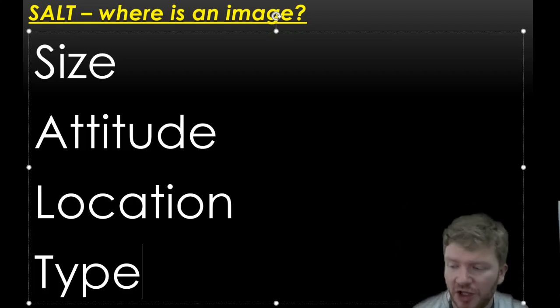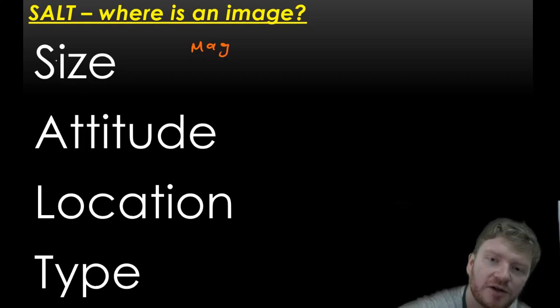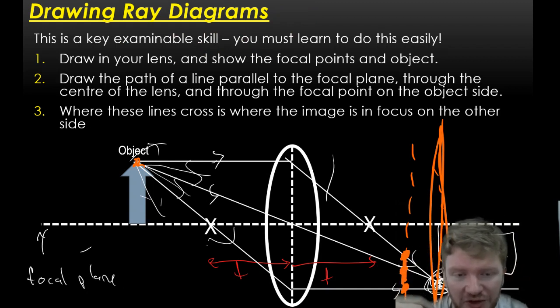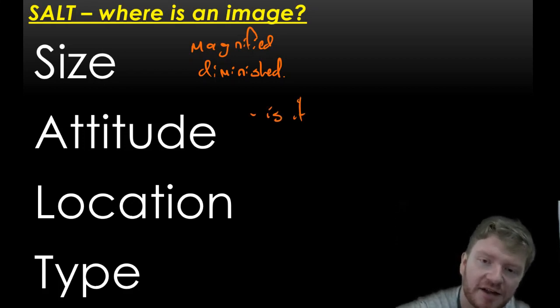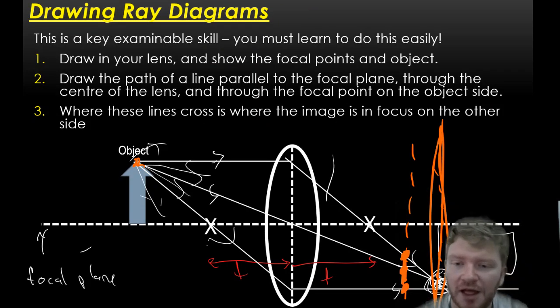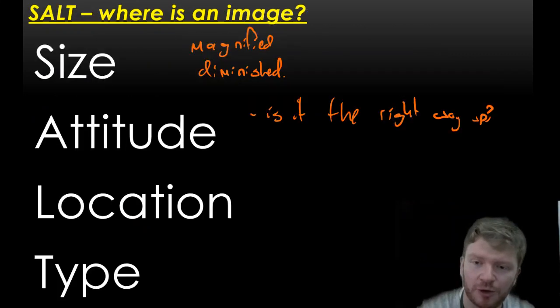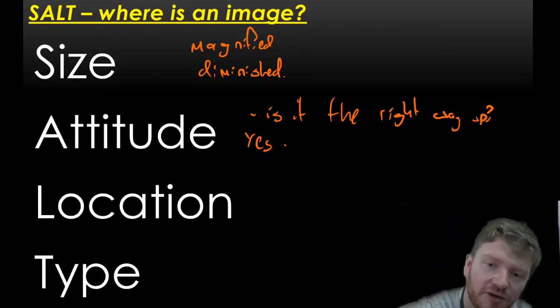So when it comes to size, you have two options. You can have magnified or you can have diminished. And hopefully, it's fairly obvious which is which. In this instance, it's about the same, actually. But if you find that the arrow that you draw is much bigger than the object, then it's a magnified image. If the arrow that you draw is much smaller, it's a diminished object. Attitude is basically, is it the right way up? If you think about the one that we've just done, it is not the right way up. The object's pointing up, our arrow points down. So if it's the right way up, we call it upright. If it's not the right way up, we call it inverted.